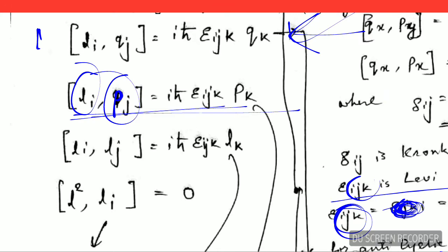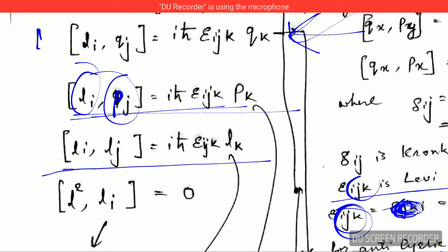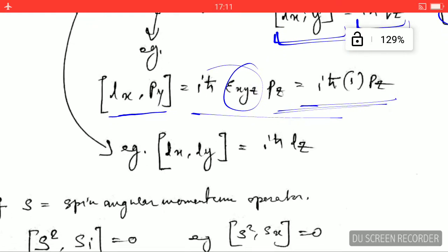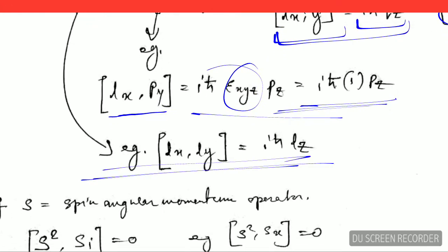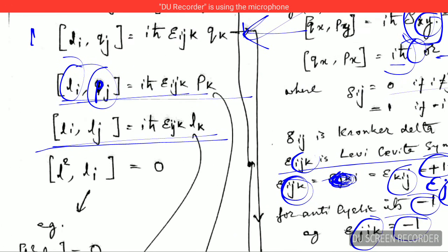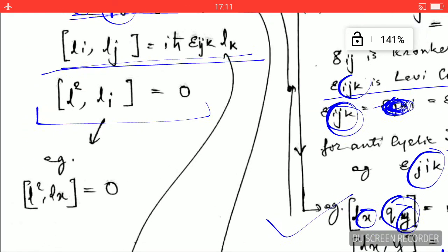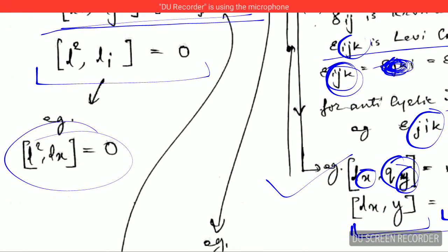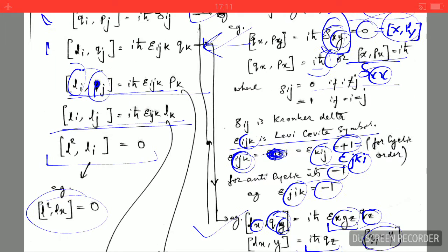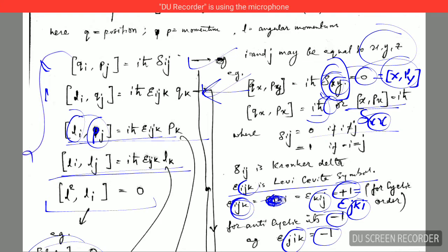There is also an important commutation relation between two angular momentum components: [L_i, L_j] = iℏ ε_ijk L_k. Its example is given similarly — for i, j, k taking values X, Y, Z respectively. You should remember all these commutation relations by heart, as they are used very frequently in CSIR NET exams.